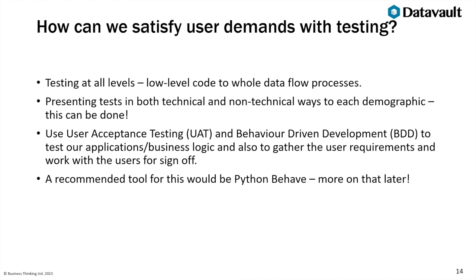We can make use of user acceptance testing as well as behavior-driven development to test our applications and business logic, but we can also use these to gather user requirements. Working consistently with users to gain these requirements and showing them the test results enables user sign-off, which is another layer of auditability within Data Vault. For user acceptance testing and behavior-driven development, I recommend Python Behave — a tool we use quite a lot in-house and find very powerful.